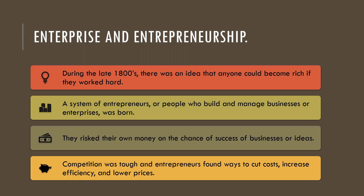During the late 1800s, there was an idea that anyone could become rich if they worked hard. A system of entrepreneurs — people who build and manage businesses — was born. Think about Shark Tank: those investors are entrepreneurs, taking their own money and risking it on businesses or ideas. Competition was tough, but entrepreneurs found ways to cut costs, increase efficiency, and eventually lower prices so everyday people could afford goods.